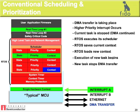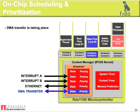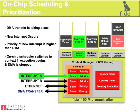Now let's take a look at how the FIDO 1100 manages the same scenario. First, let's assume that a DMA transfer is taking place. Then a high-priority interrupt occurs. The priority of the new interrupt is higher than the DMA. An on-chip scheduler switches to context 1. Execution begins and the DMA is stopped in a single clock cycle.